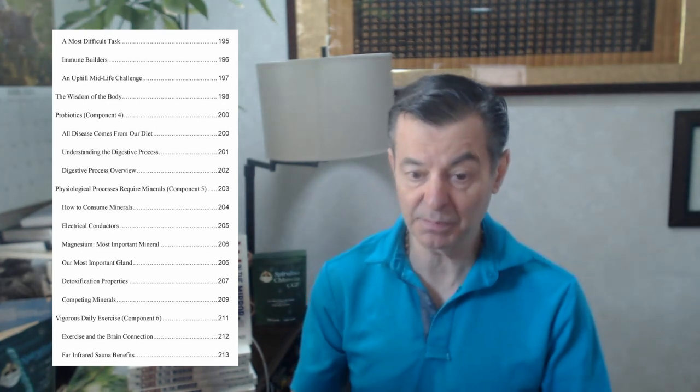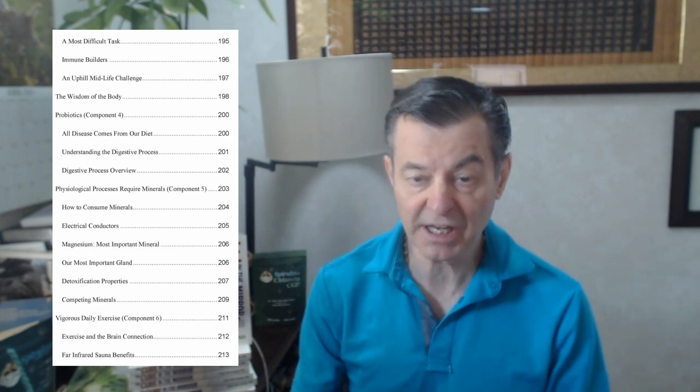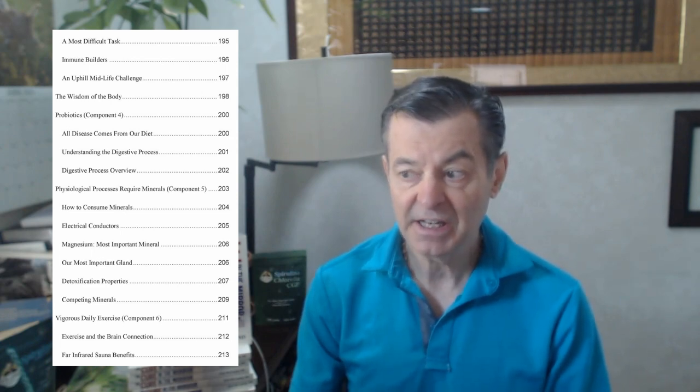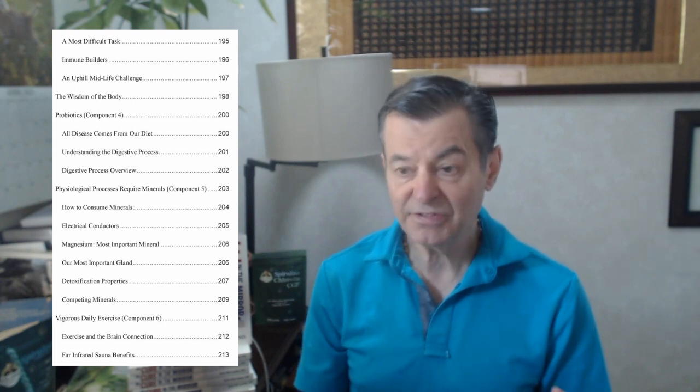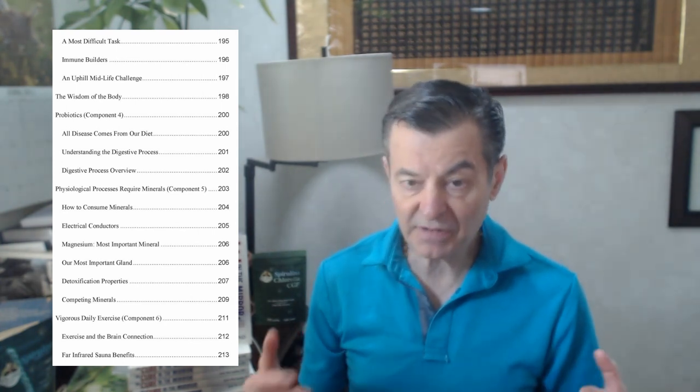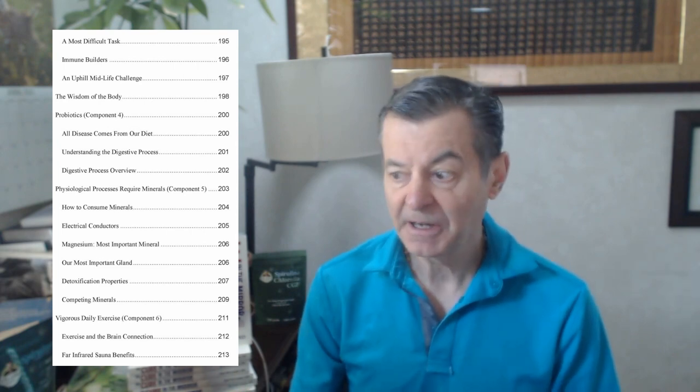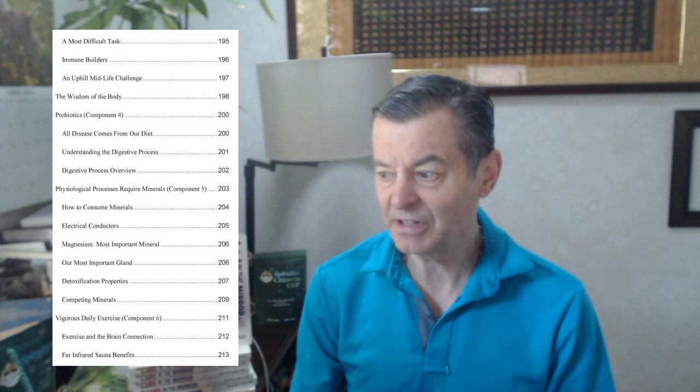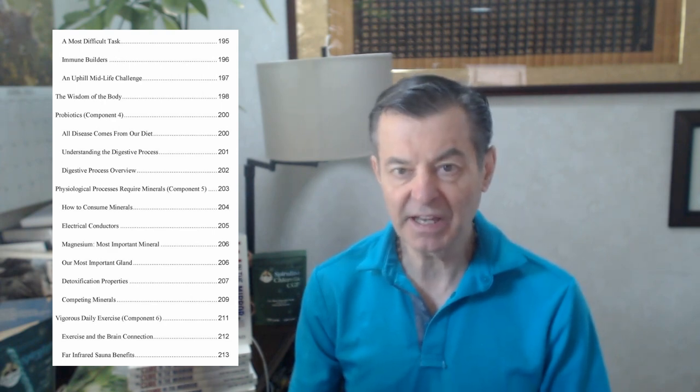Vigorous daily exercise. Component number six of my seven component health protocol. You've got to exercise. You've got to get out every day. You need to do hopefully 15, 20 minutes, 25 minutes every day where you're doing cardiovascular, where you're panting and you're breathing. People just want to get lazy about that and not do the right thing. But daily vigorous exercise is critical to great health.